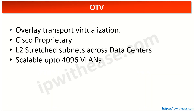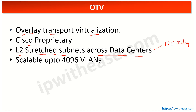Now let's understand OTV — Overlay Transport Virtualization. It is a Cisco proprietary technology. Like VXLAN, OTV is responsible for stretching Layer 2 across data centers. However, VXLAN supports both intra-data-center and inter-data-center Layer 2 extension, while OTV is only responsible for inter-DC communication, not intra-DC. In terms of scalability, OTV supports only 4096 VLANs, which is a limitation compared to VXLAN's 16 million-plus segments.